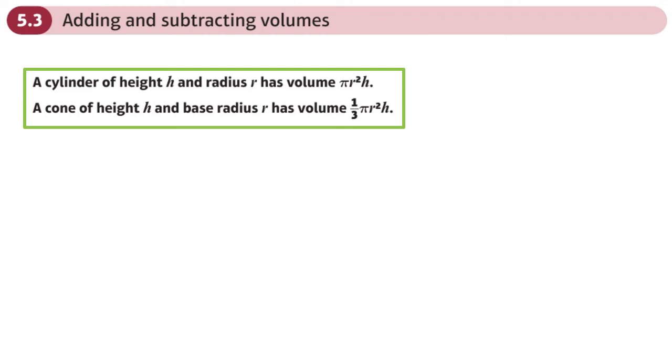This is the third section, volumes of revolution, adding and subtracting volumes. This is going to be where maybe we have a more complex volume to work out, and where we may spot that we've got maybe a cylinder or a cone that we can add or subtract to find the volume of revolution.